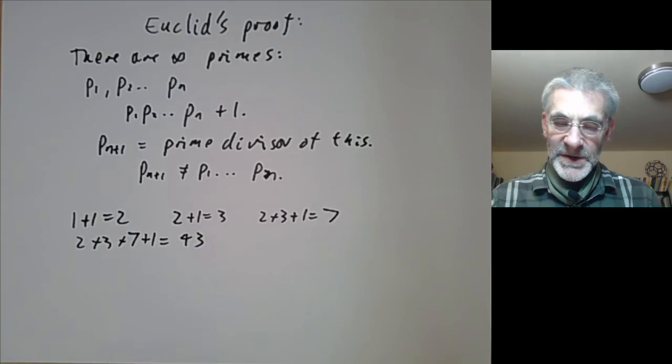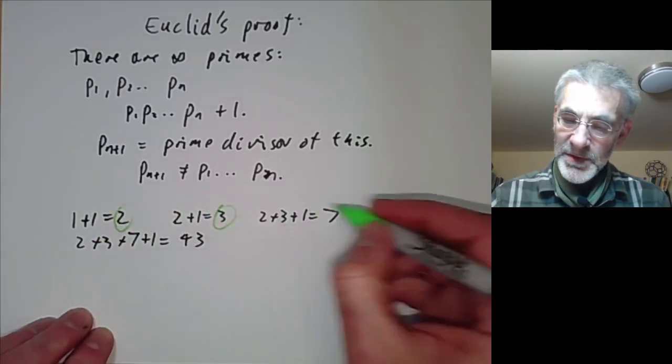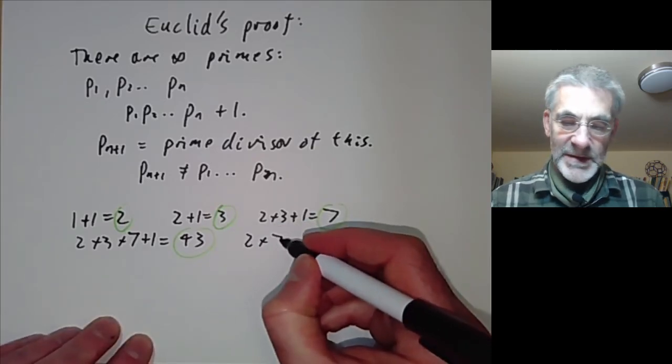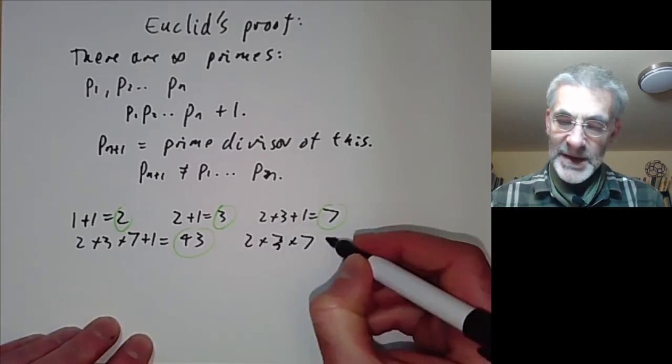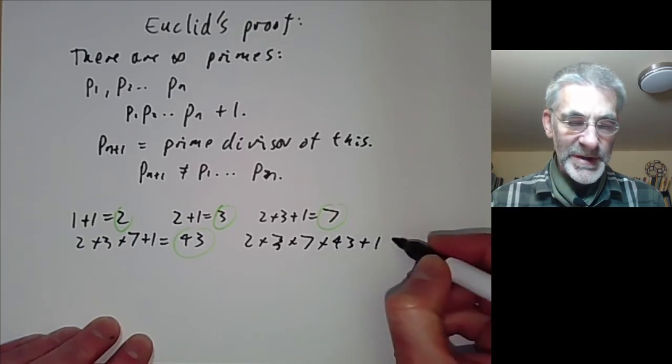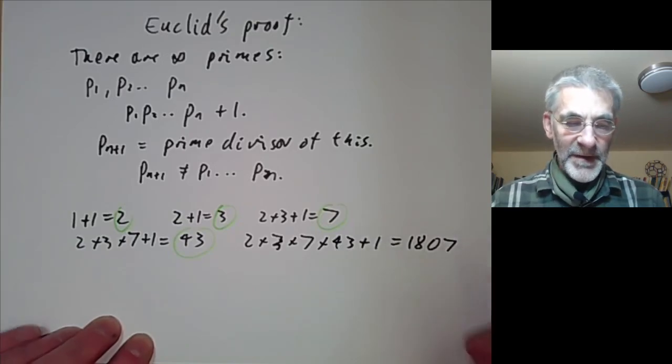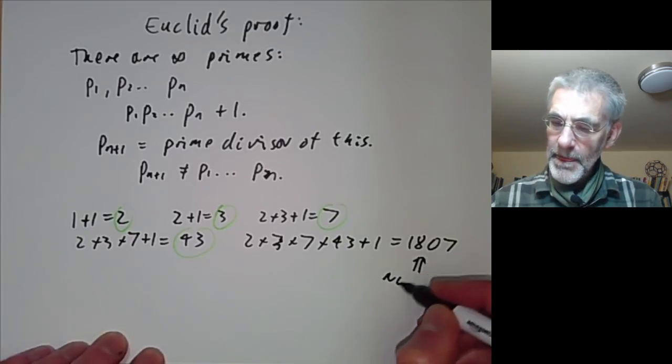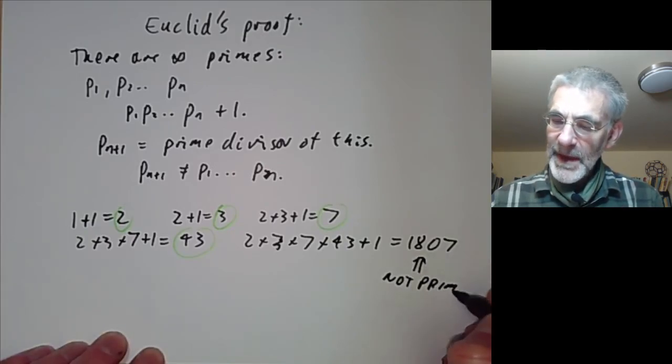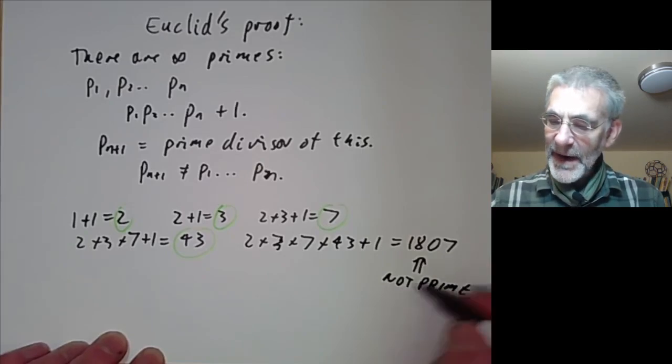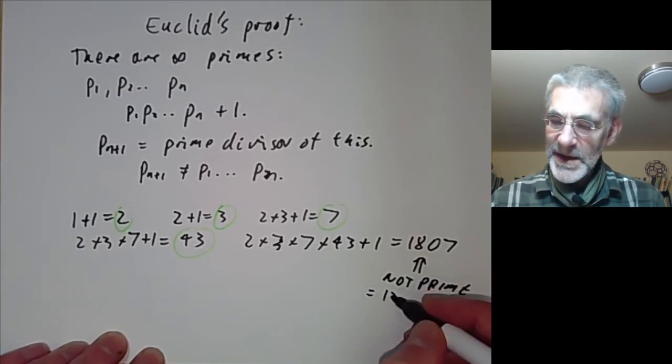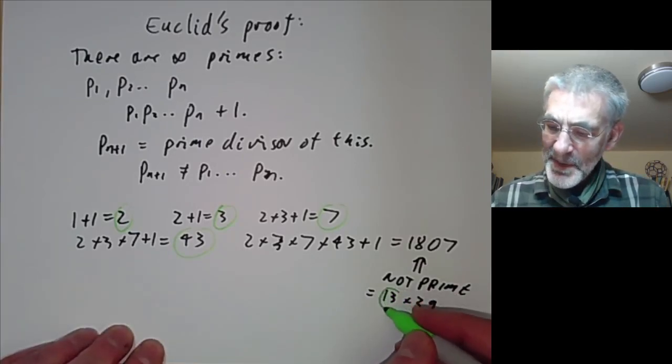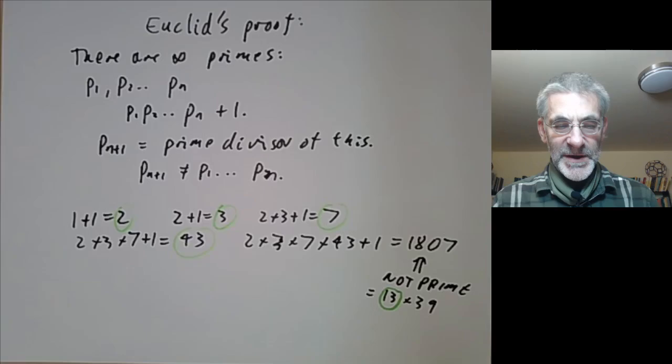So we've got lots of primes here: 2, 3, 7, 43, and then we take 2 times 3 times 7 times 43 plus 1 which is 1807 and this is not prime. But that doesn't matter. What we do is we factorize it. It's equal to 13 times 139 so we get a new prime. Well you may as well take the smallest one which is 13.